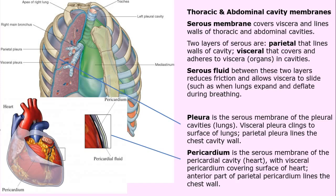Think of the lungs: when we take a deep breath, the sacs surrounding the lungs are sliding past each other because there's serous fluid in between. Sometimes, only rarely, this serous fluid becomes inflamed and we have an infection — it can be quite dangerous. The pleura is the serous membrane of the pleural cavities. It clings to the surface of the lungs, allows expansion and sliding, and prevents the ribs from cutting into the lungs.